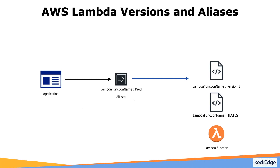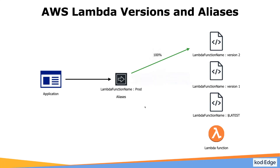Now let's say you want to deploy a new feature. You can create a new version and publish it. We can configure our alias to divert a certain amount of traffic to the new version. Once we are happy with the new version, we will divert 100% traffic to it and remove the other link. This is called the blue-green deployment strategy. The alias is just a pointer, and the application is not required to do any configuration if there is a version change in the background. Versions are immutable — once you publish a version, you can't change the code. But aliases are mutable; we can change them later.